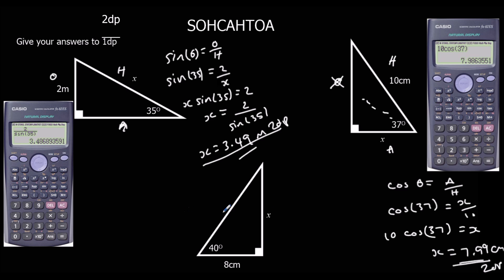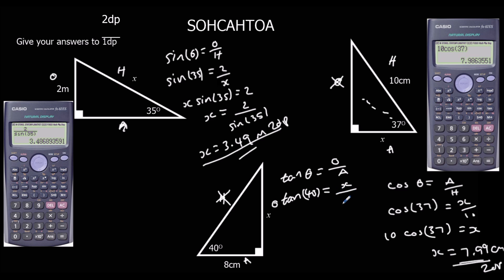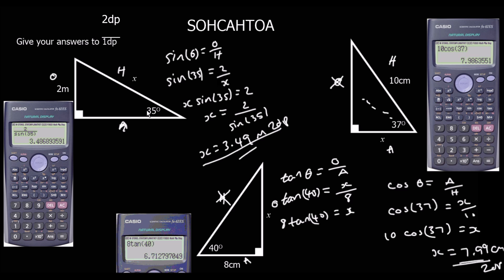Finally, label the triangle: H, O, and A. H is by himself, so we use TOA. Tan of the angle equals O over A: tan 40 = X ÷ 8. Times by 8: X = 8 × tan 40. Putting that in the calculator gives 6.71 cm to 2dp.